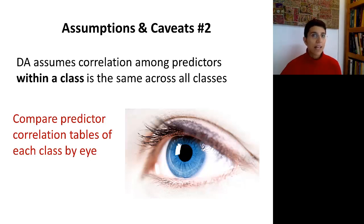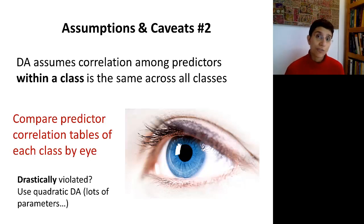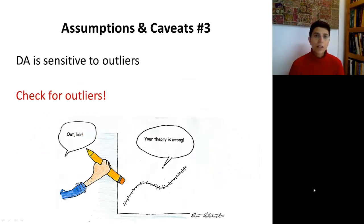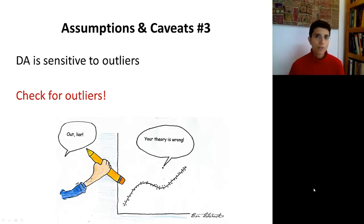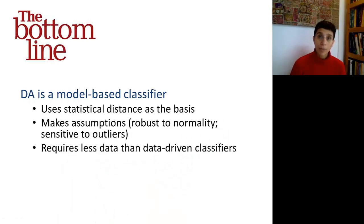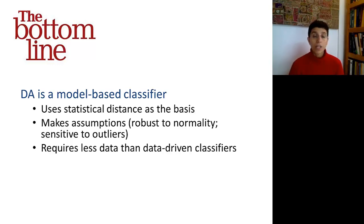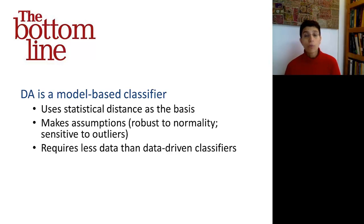A third consideration related to normality is sensitivity to outliers — discriminant analysis really doesn't like outliers. For that reason, it's useful to do exploratory analysis beforehand and remove any outliers that might influence the analysis. To summarize: discriminant analysis is a model-based classifier that uses statistical distance for computing scores. It is robust to violations of the normality assumption, but sensitive to outliers and requires equality of covariance matrices. When assumptions are reasonably met, discriminant analysis can be used effectively even with small samples, which is not the case with more data-driven methods.